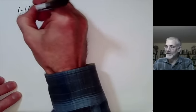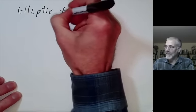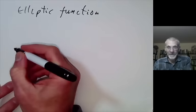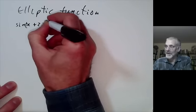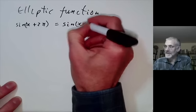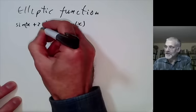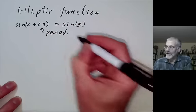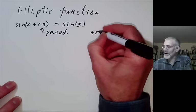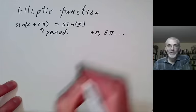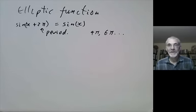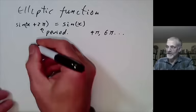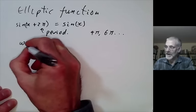So first of all, what is an elliptic function? A periodic function is a function like sine of x — sine of x plus 2π equals sine of x. Here 2π is the period, and it also has other periods: 4π, 6π, and so on are also periods. But all the periods are essentially multiples of 2π, and you can ask: can you have a function with two independent periods, say omega 1 and omega 2?